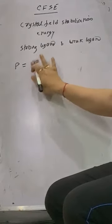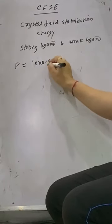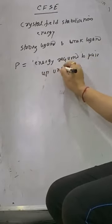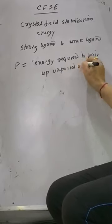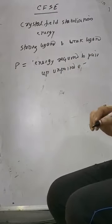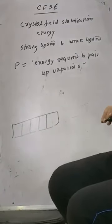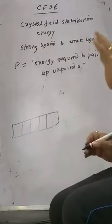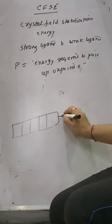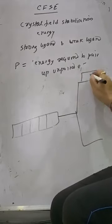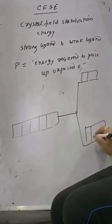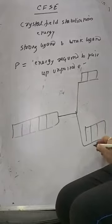P is the pairing energy required to pair unpaired electrons. Now, to find out a CFSE value, we will be doing it with octahedral high spin and low spin complexes — that is strong ligand and weak ligand. In octahedral, EG is at the top and T2G is at the bottom.